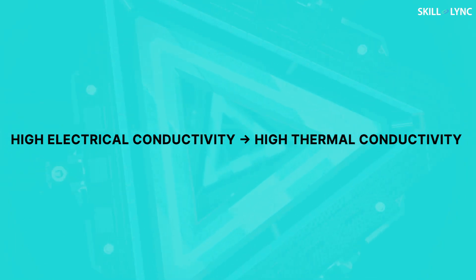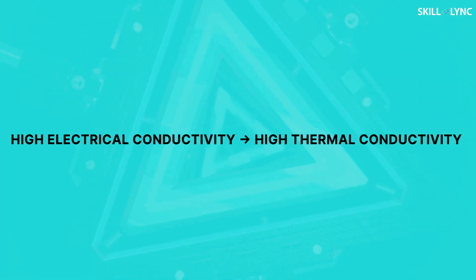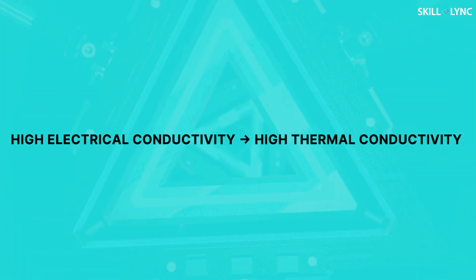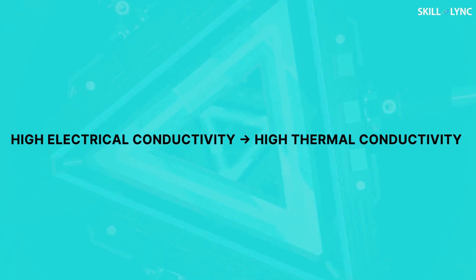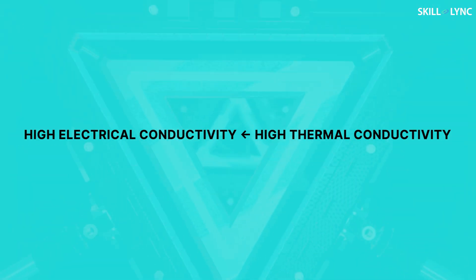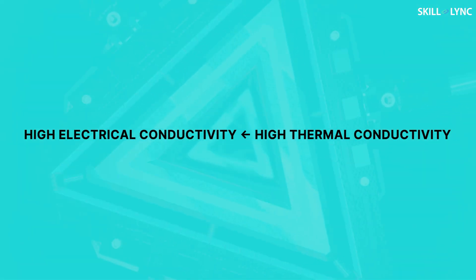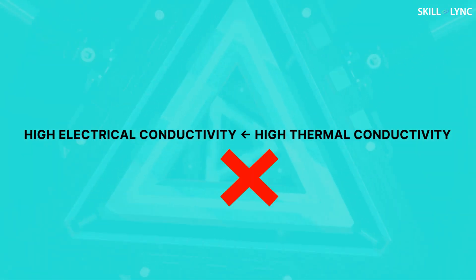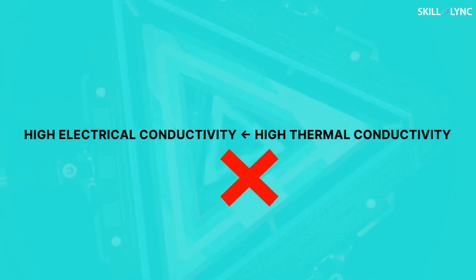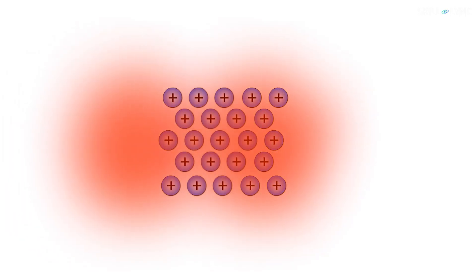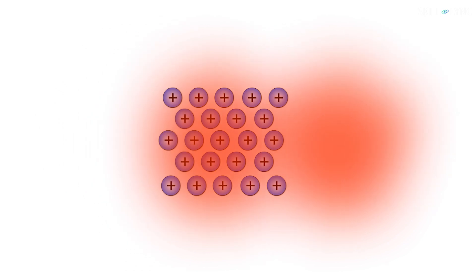Generally, as a rule of thumb, it is often considered that materials with high electric conductivity also have high thermal conductivity. But the opposite is not true, because high thermal conductivity cannot mean high electric conductivity. Electric conductivity is dependent on the movement of electrons, whereas thermal conductivity is not.